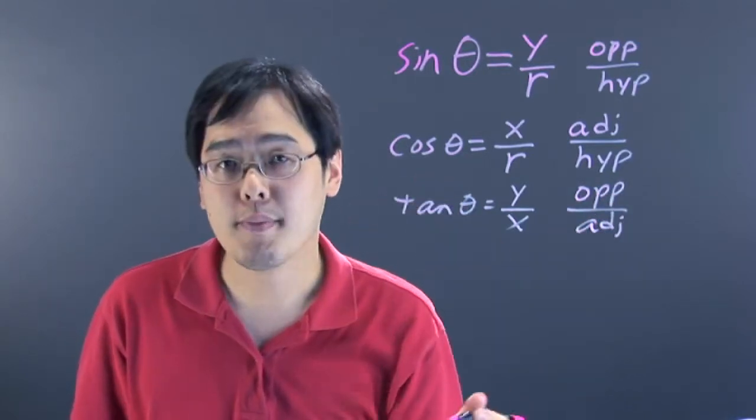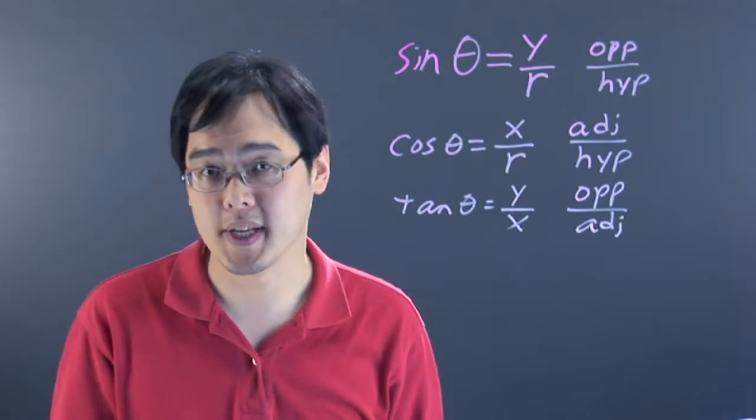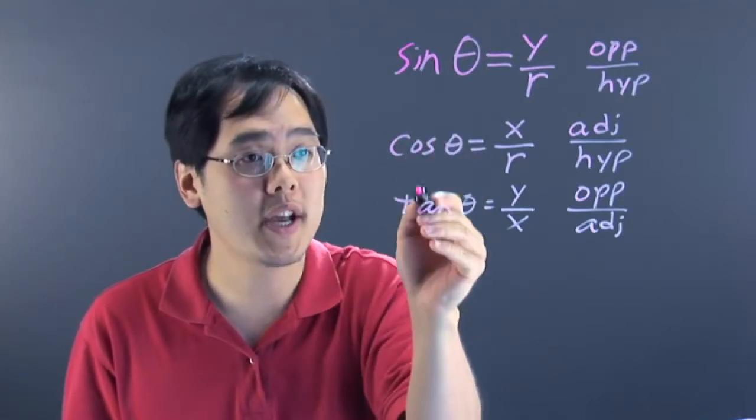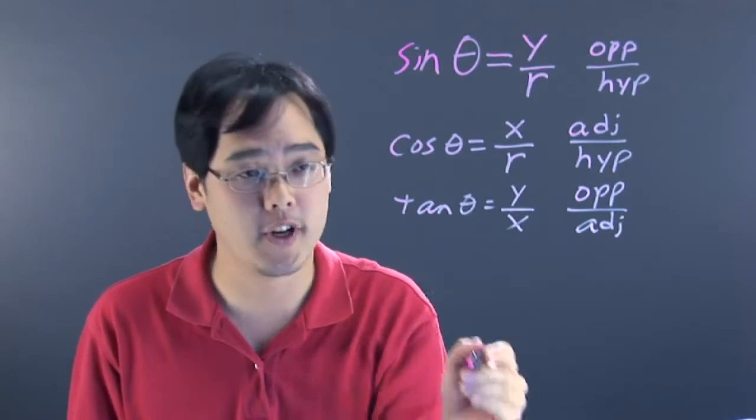Now, those are the big three, but the other three make up the big six, because with sine, cosine, and tangent comes their reciprocal functions.